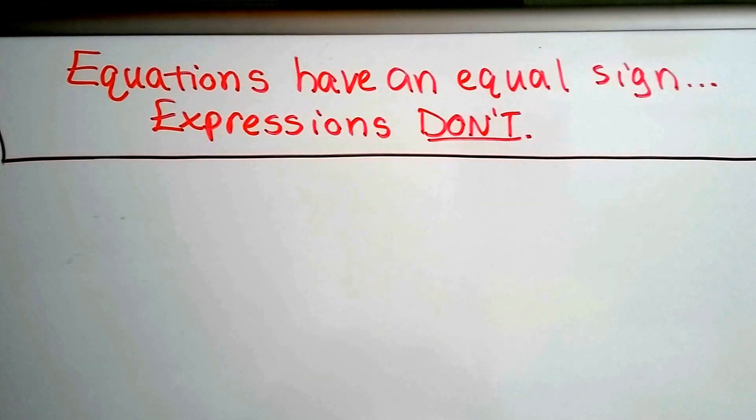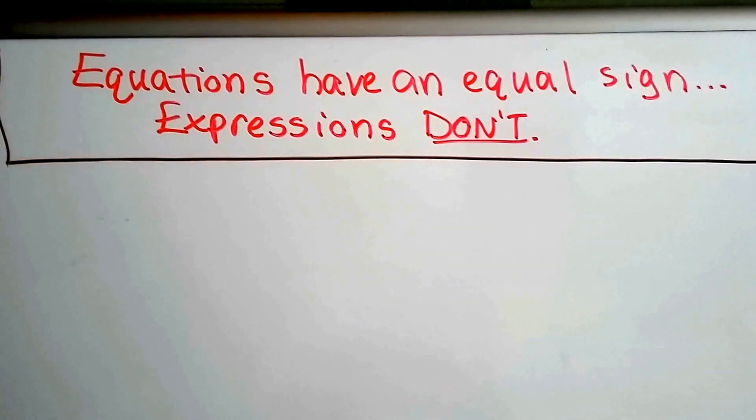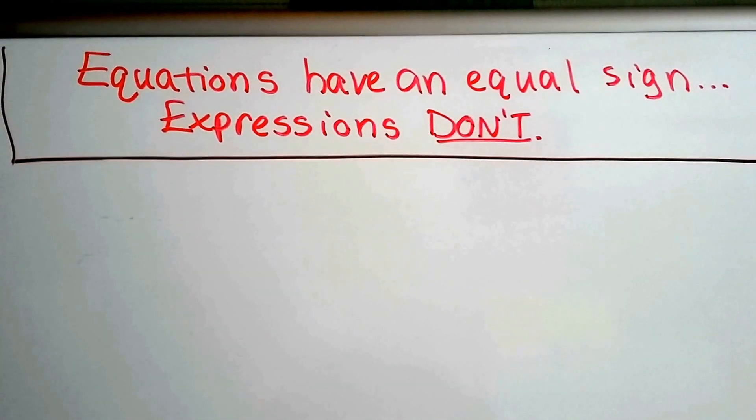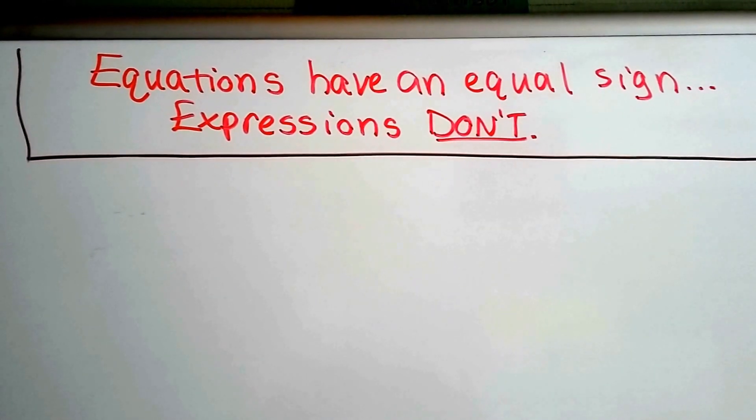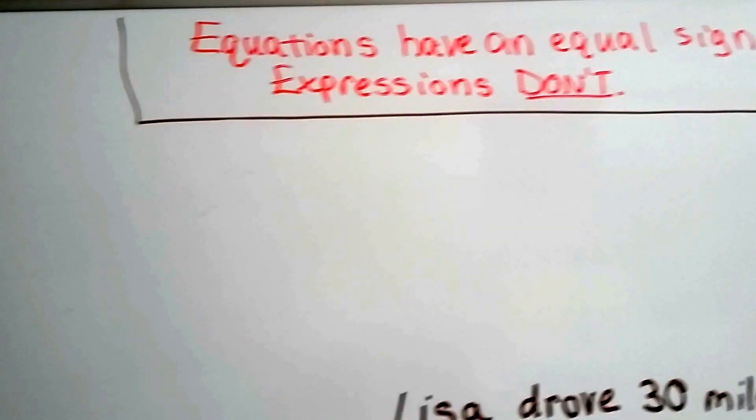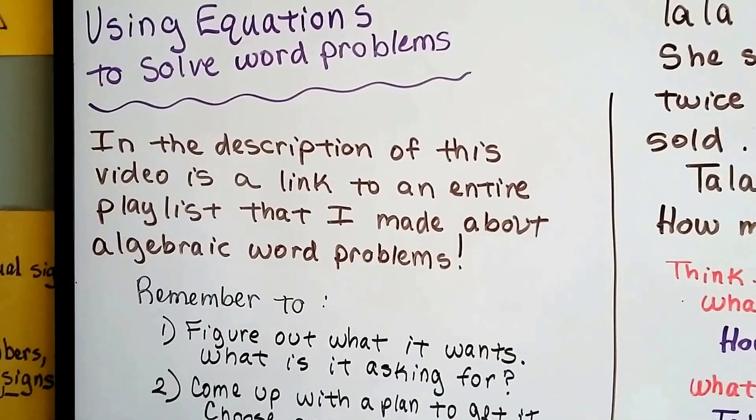Remember that equations have an equal sign and expressions don't. That's how you can tell them apart. Expressions don't have an equal sign, they just have a bunch of terms in them - plus signs, minus signs, the operation signs with numbers and variables, but there's no equal sign.